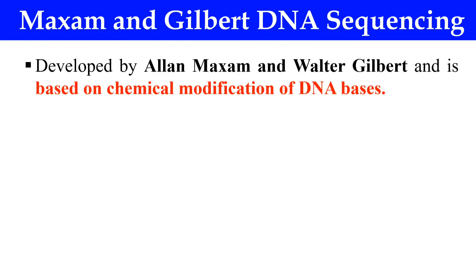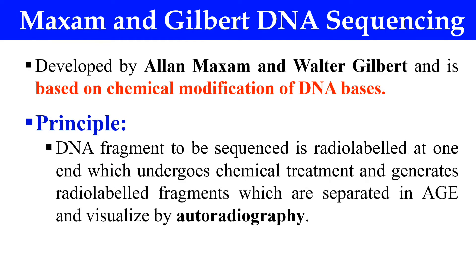The Maxim-Gilbert method was developed by Alan Maxim and Walter Gilbert, and it is based on chemical modification of DNA bases. The principle is simple: we first directly label our template DNA, then modify the bases using certain chemicals. Due to this base modification, we obtain radioactively labeled fragments according to the modified base. These fragments are separated by agarose gel electrophoresis, and ultimately we can read our sequence from there.